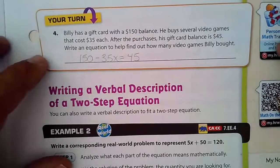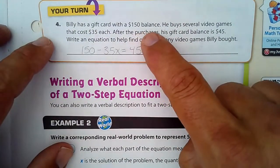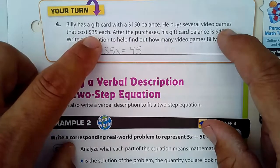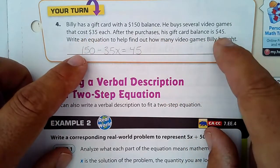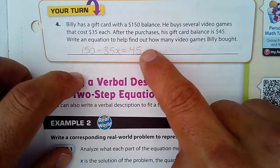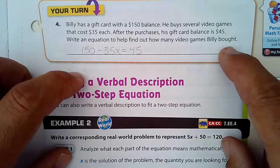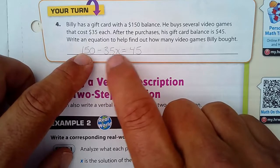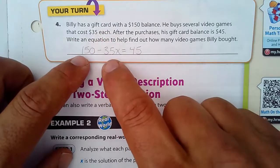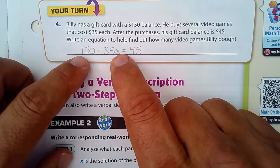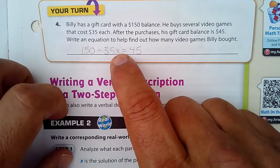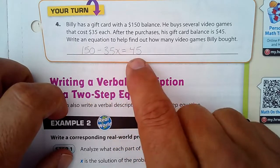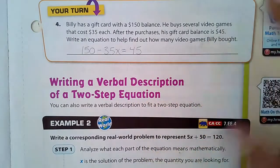Next. Billy has a gift card with a balance of $150. He buys several video games that cost $35 each. After the purchase, his gift card balance is $45. Write an equation to help find out how many video games he bought. So, $150. You have to subtract $35 for each. When you have for each, that means you're going to be multiplying 35 times the number of video games he bought. You're subtracting this because you're taking away from the $150. And in the end, that equals $45.